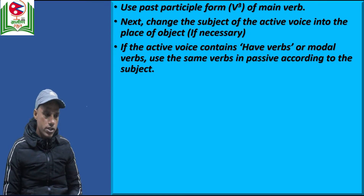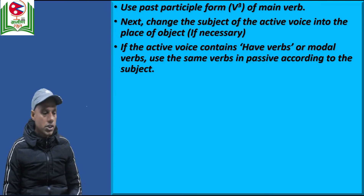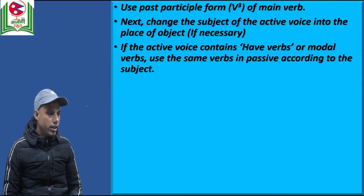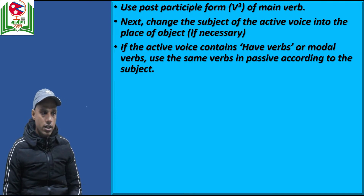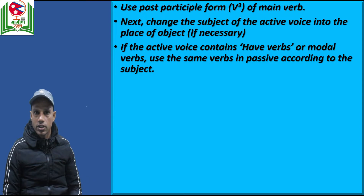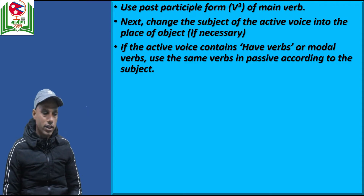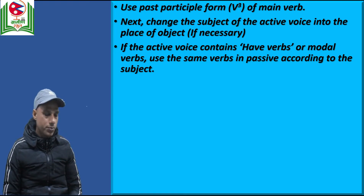Change the subject of the active voice into the place of the object if necessary — sometimes it may be optional to mention the subject of the active voice in passive. If the active voice contains have-verbs — have, has, or had — or modal verbs like will, would, shall, should, can, could, may, might, etc., use the same verb in passive according to the subject. In case of have-verbs or modal verbs, you have to use the same verbs according to the subject in the passive form.